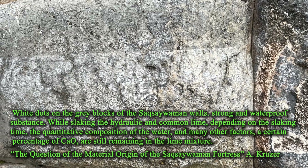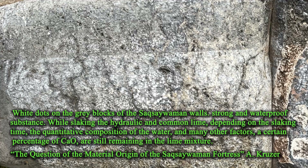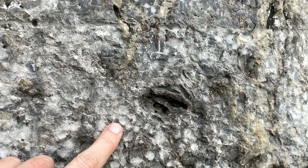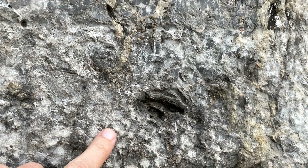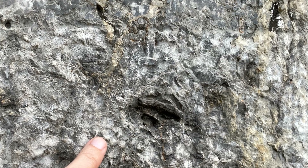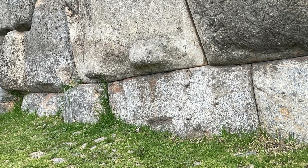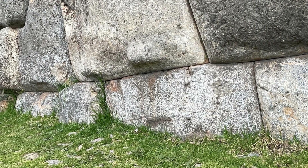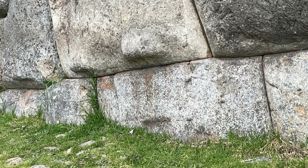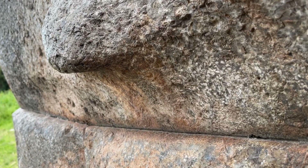Alternative explanations try to link them to side effects of geopolymer setting or exposure to high temperatures. One might expect that in both camps these marks would be used as important arguments, yet this does not happen. The white dots remain largely ignored — there are no publications dedicated to their origin and not even official analyses of their structure. Let's try to understand why.